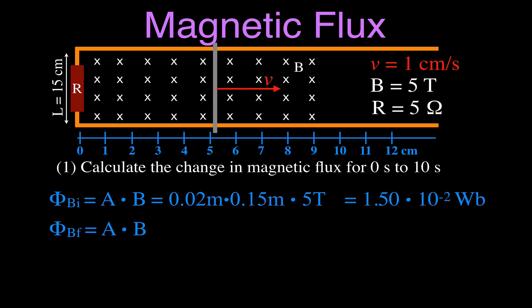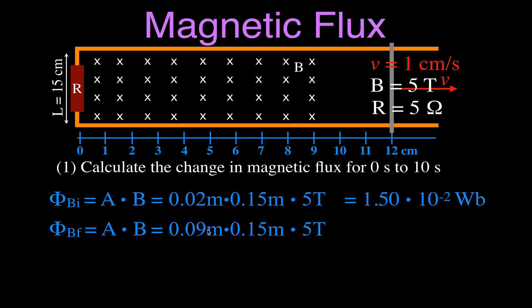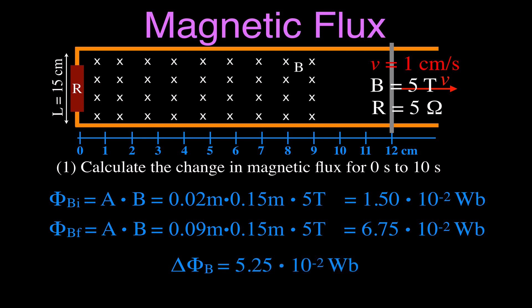Now we're going to move the bar from 2 centimeters to 12 centimeters and calculate the final magnetic flux. You might think the width here is 12, but the magnetic field stops at 9. So it's going to be actually 9 centimeters, 0.09 meters, times the same 0.15 meters, times the same magnetic field strength, and that gives us a final magnetic flux of 6.75 times 10 to the minus 2 Webers. It's only the portion that has the magnetic field in it that we count for the area. So the change in the magnetic flux is the final minus the initial, giving us 5.25 times 10 to the minus 2 Webers.